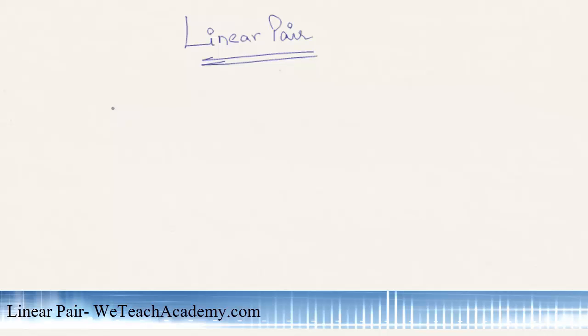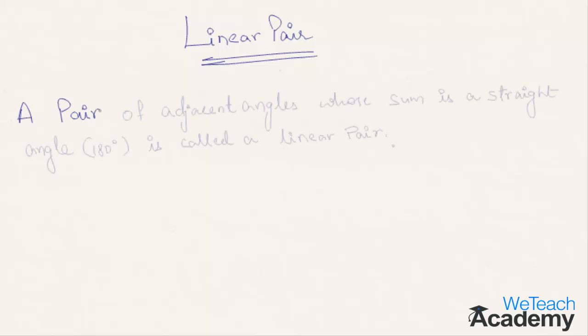Hey guys, welcome to vteachacademy.com and here in this presentation we are going to discuss about linear pair. What is a linear pair? A pair of adjacent angles whose sum is a straight angle, that is 180 degrees, is called a linear pair.